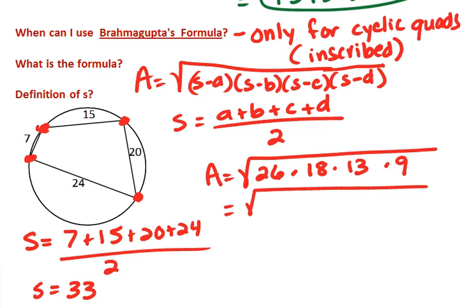And again, I see some common factors, this 26 and this 13. Notice that the 26 I can break apart, and the 18 has a factor of 9 that I could pair up with that 9.